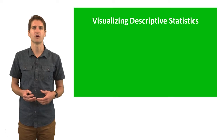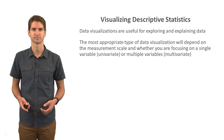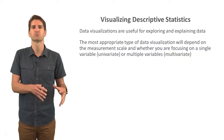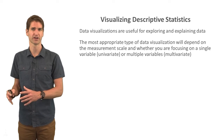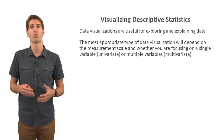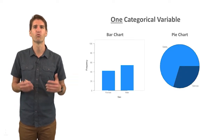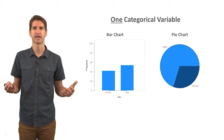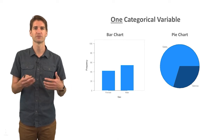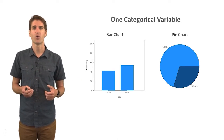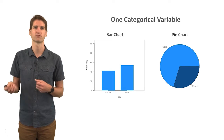Now let's talk about how we visualize descriptive statistics and the value that visualization can have for describing our data. Data visualizations are useful for both exploring and explaining our data. The most appropriate type of visualization will depend on the measurement scale and whether you're focused on a single variable — a univariate display — or multiple variables — a multivariate display. For example, if we have one categorical variable and we're interested in frequencies, we might present the data as a bar chart showing the frequency of male and female employees, or we might present it as a pie chart, which is great for presenting proportions.